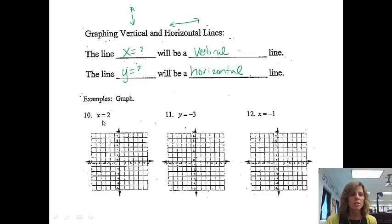If we look at the first example, we have x equals 2. Well, I know from just looking up at my notes up here that the line x equals 2 will be a vertical line. So it's got to go up and down, and since it says x equals 2, it's going to go up and down at x equals 2.